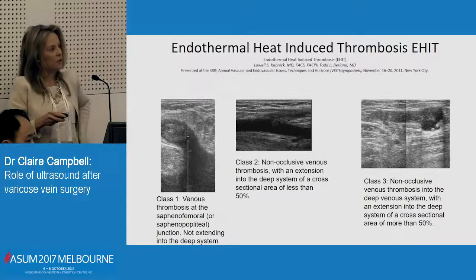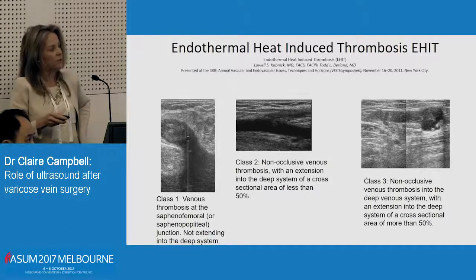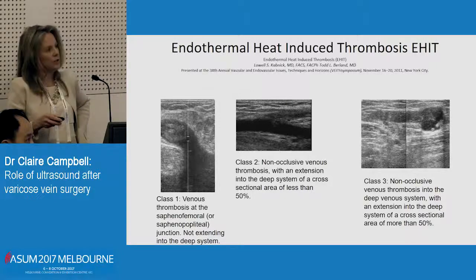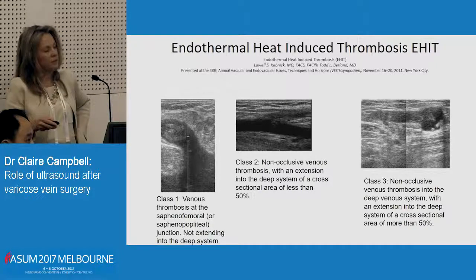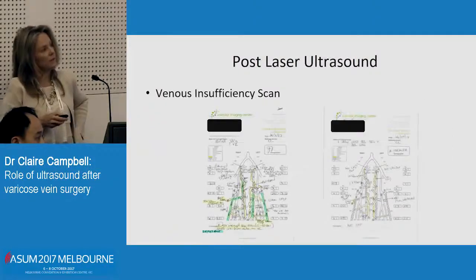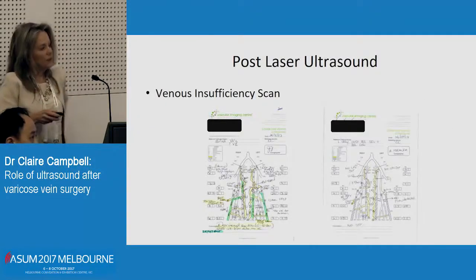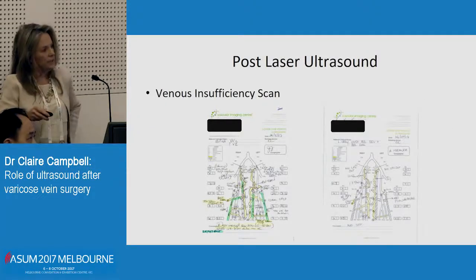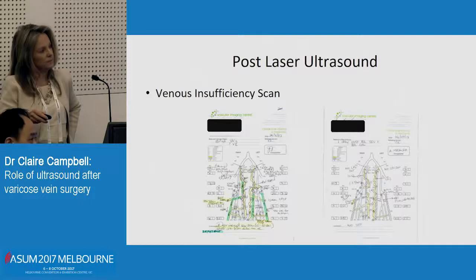This is the original CABINET classification of endothermal heat-induced thrombosis. In the proximal untreated segment of vein: if you've got thrombus extending up to the junction, it's a grade 1. If it's going through the junction but not more than 50%, it's a grade 2. And if it's more than 50%, it's a grade 3.